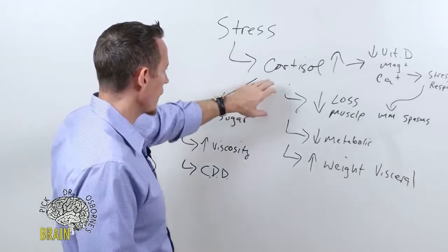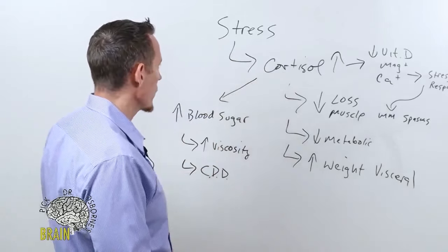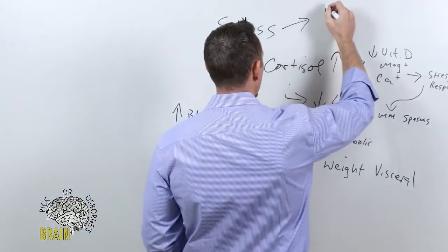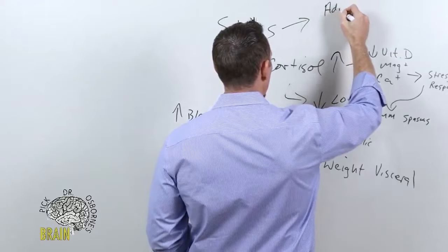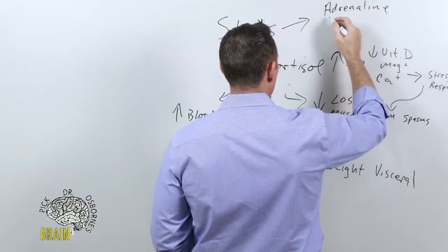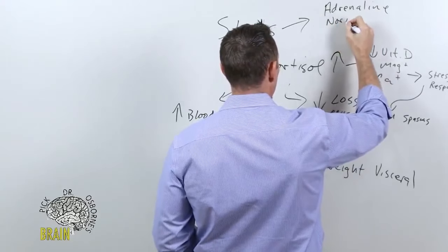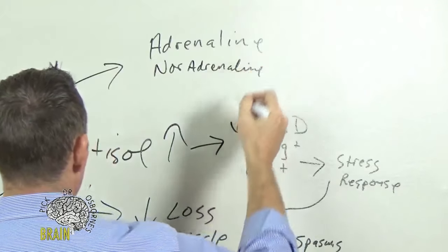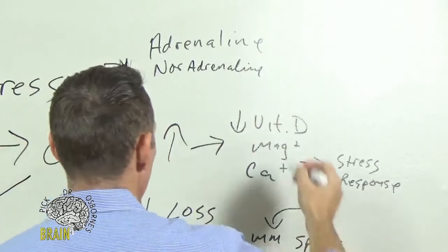One of the other things that chronic stress is going to drive up is adrenaline and it's going to drive up noradrenaline as well. These are neurotransmitters, chemicals produced by your adrenal glands.